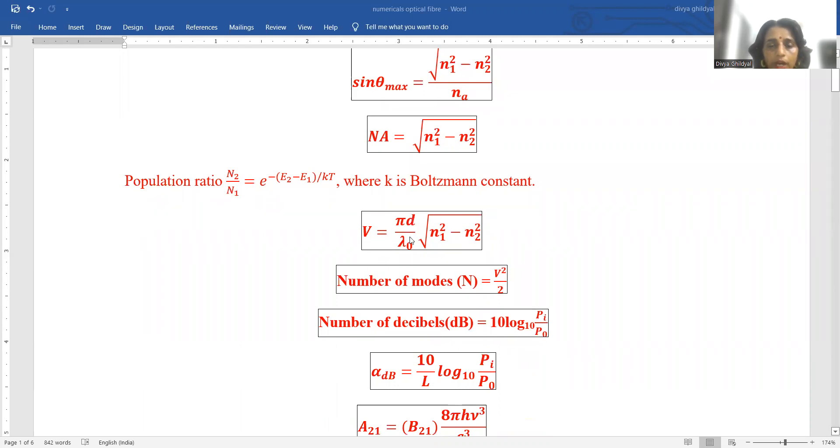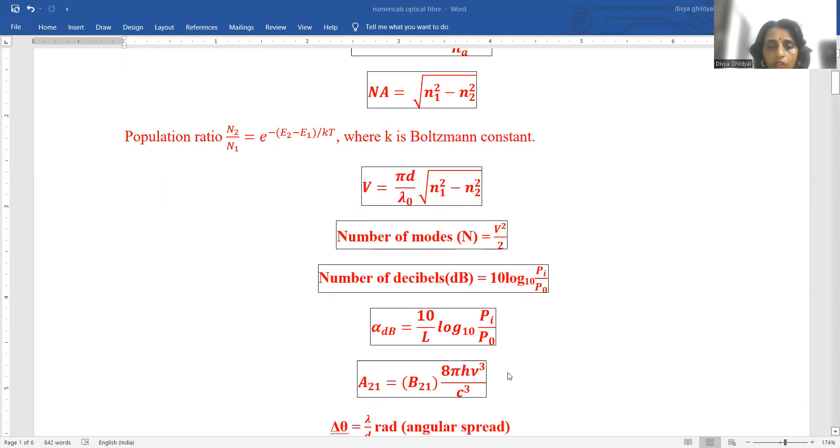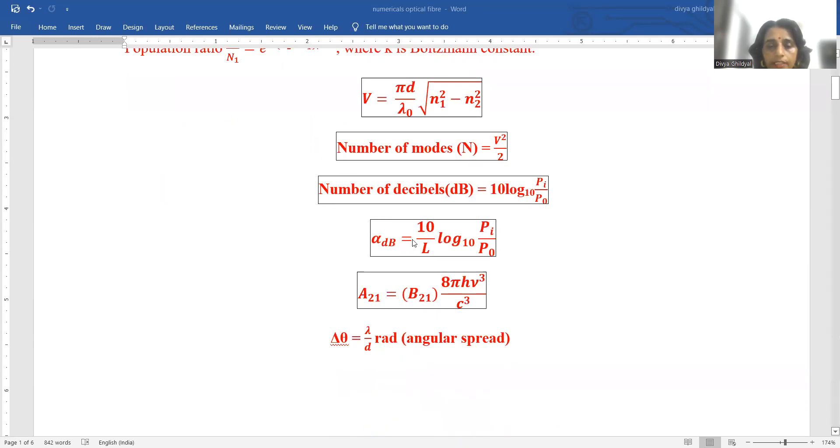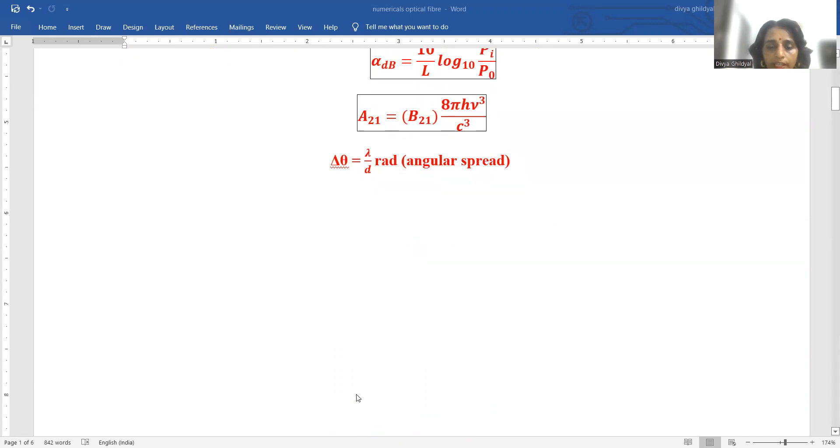V number equals pi d upon lambda naught under root n1 square minus n2 square. Number of modes is square of V number divided by 2. Number of decibels is 10 log base 10 pi by p0. Alpha decibel equals 10 upon L log base 10 pi by p0. Relationship between Einstein coefficients: A equals b 8 pi h mu cube by c cube. Angular spread del theta equals lambda upon d.